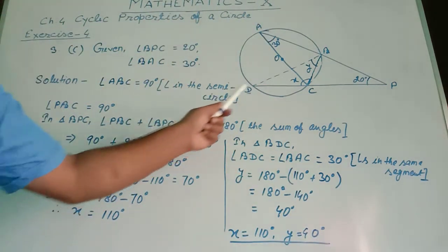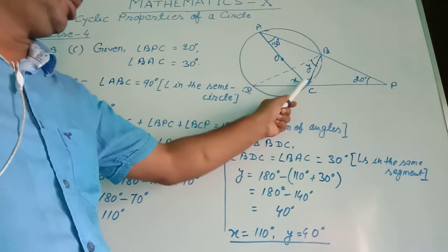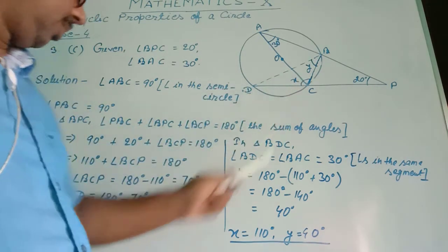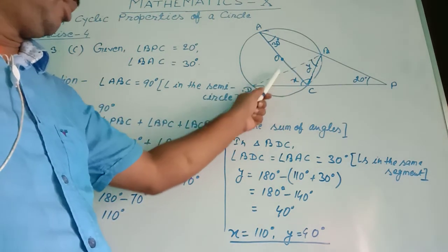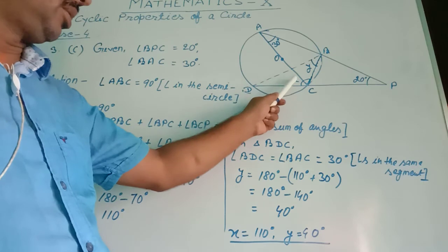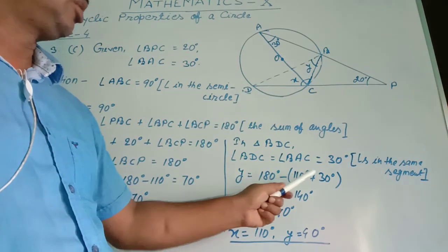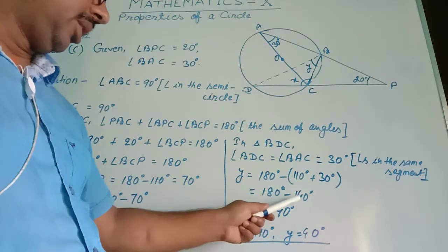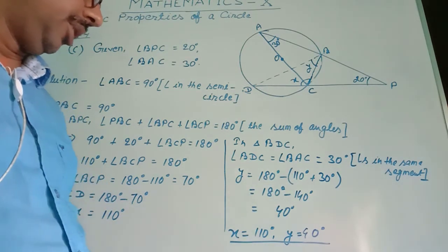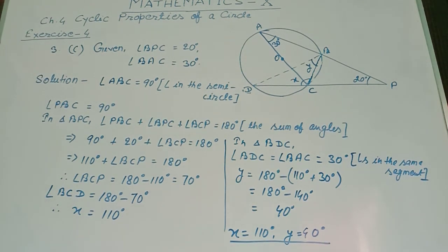In triangle BDC, this angle is 30 degrees because of angles in the same segment, and angle BCD is 110 degrees. Therefore, Y equals 180 minus 30 plus 110, since the sum of angles in a triangle is 180 degrees. So Y equals 180 minus 140, giving Y equals 40 degrees. The final values are X equals 110 degrees and Y equals 40 degrees.